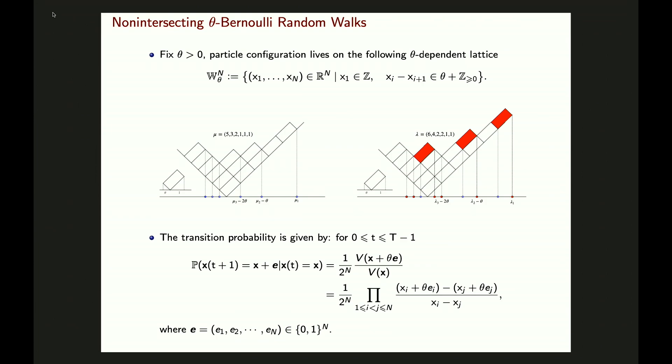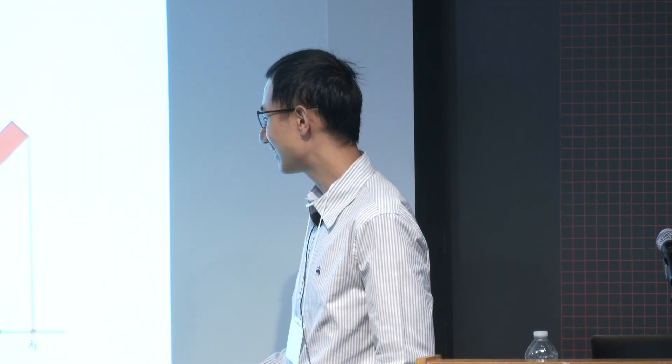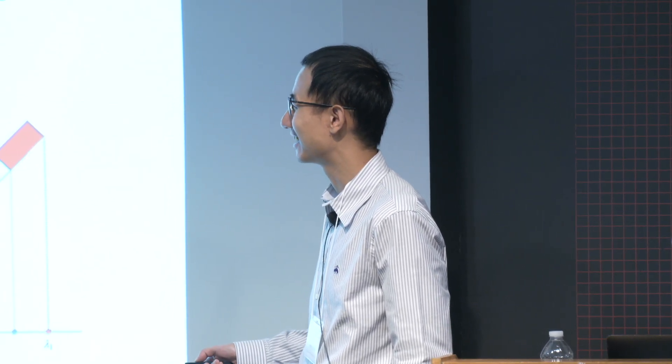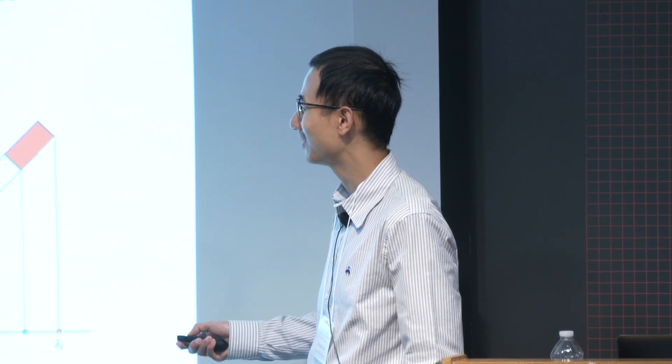For the non-intersecting theta Berlouli random walks, the transition probability is exactly the same as the non-intersecting Berlouli random walk, except you have an extra theta. This ensures the particles will not pass each other: if xᵢ and xⱼ are already at distance theta and eᵢ = 0, eⱼ = 1, the difference will be 0 and the probability will be 0. So the transition probability is non-zero only if eᵢ ≥ eⱼ whenever xᵢ−xⱼ = θ, keeping the particle gap at least theta. Taking theta = 1 recovers the integer lattice.